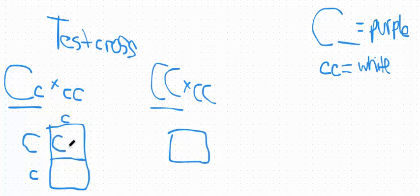So this cross is showing me that if the dominant individual, the purple flowered individual, is heterozygous, I should expect a one to one ratio of purple and white flowers in their offspring. So for every one purple I should expect to find one white flowered individual.